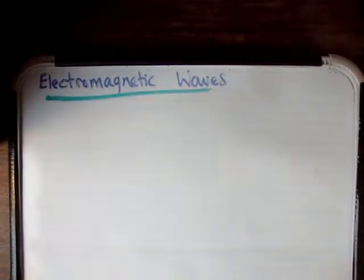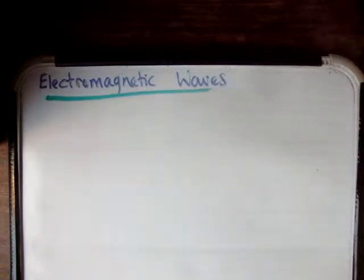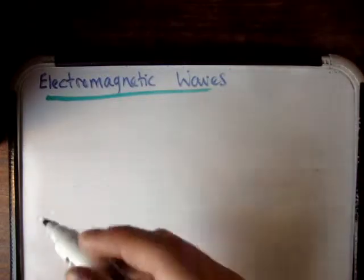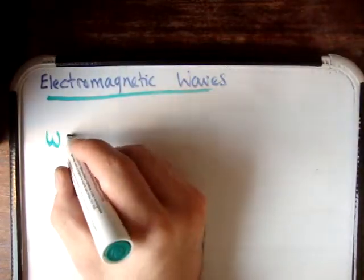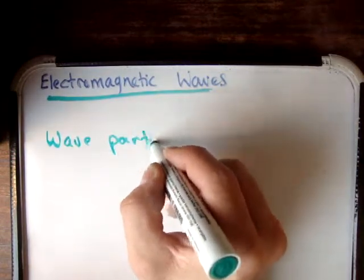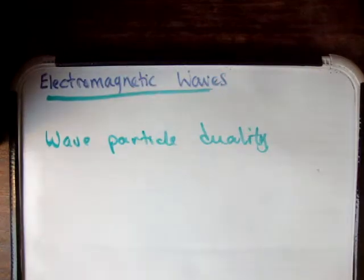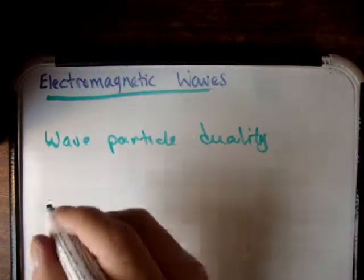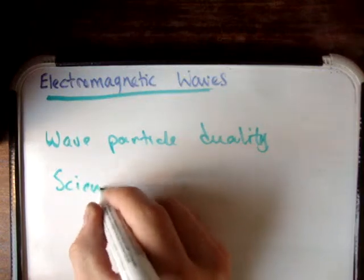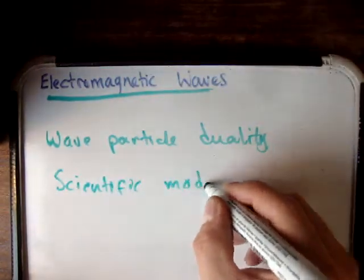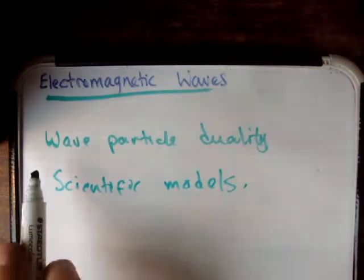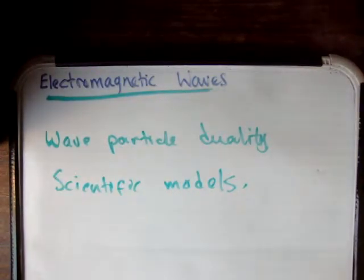In this video I'd like to talk about electromagnetic waves. This is aimed at somebody who is doing a course in optics in college, and I'm going to talk about how we derive a wave equation. It's going to be pretty basic — the fundamentals. I would like for you to watch my video on wave-particle duality, or even my video on scientific models. In this particular video I'm only going to be talking about the wave model of light.